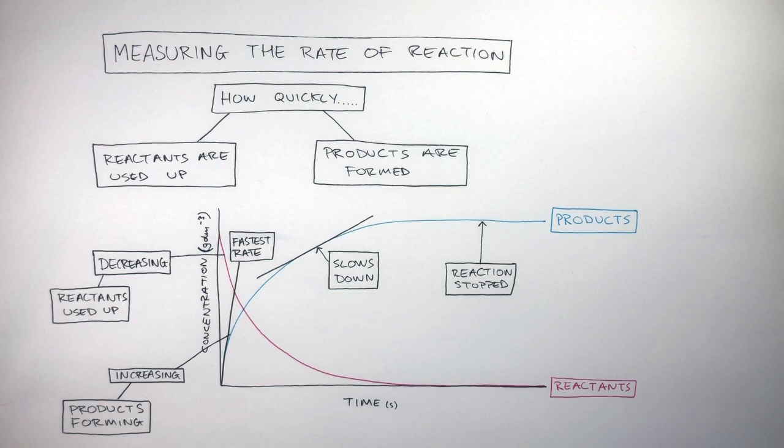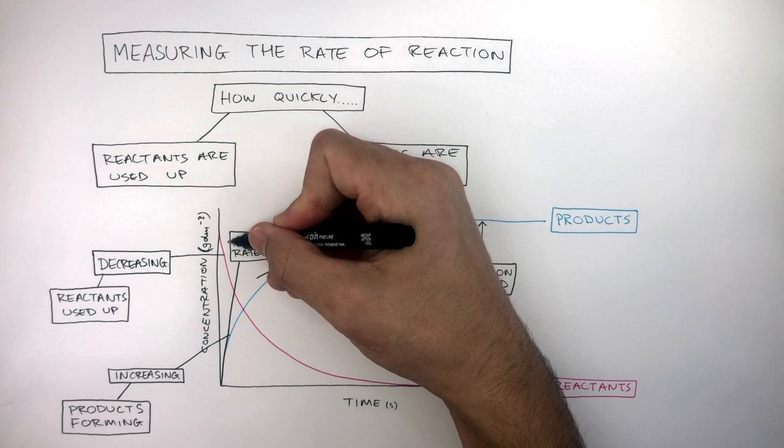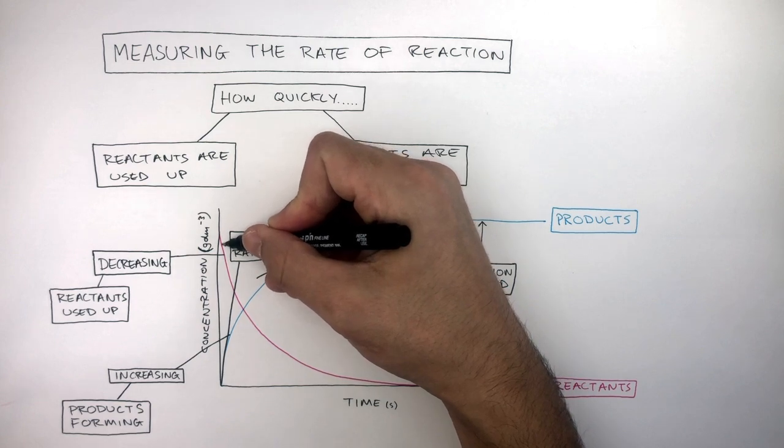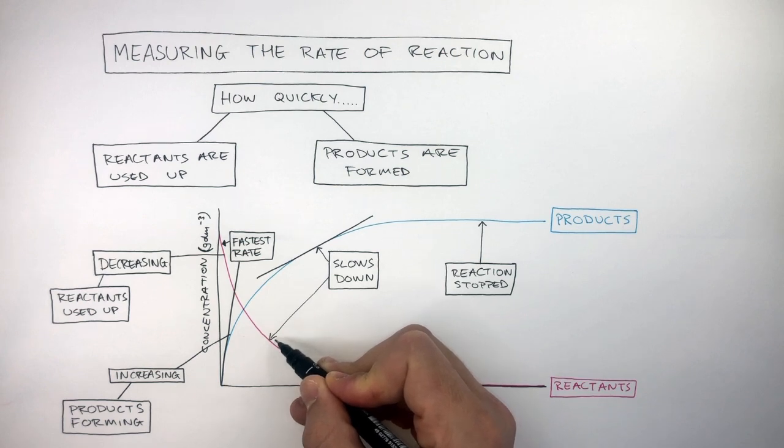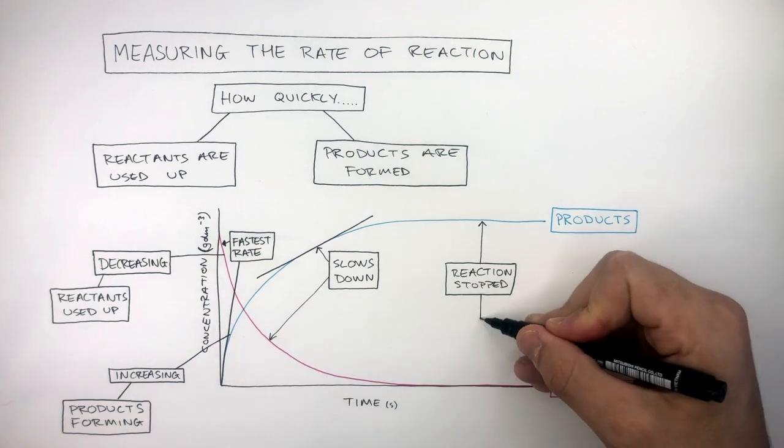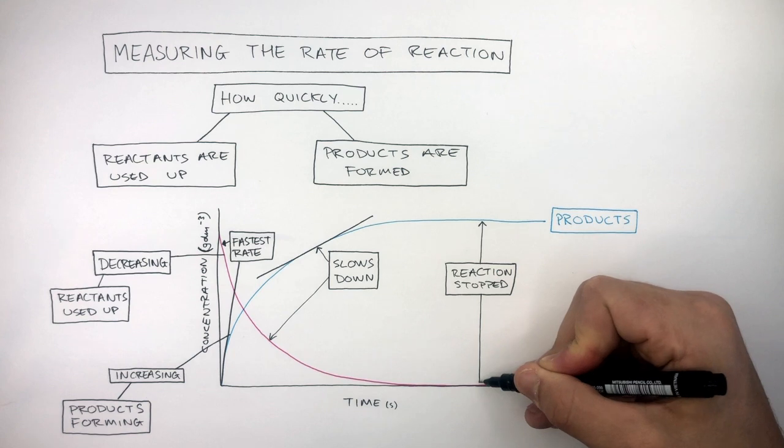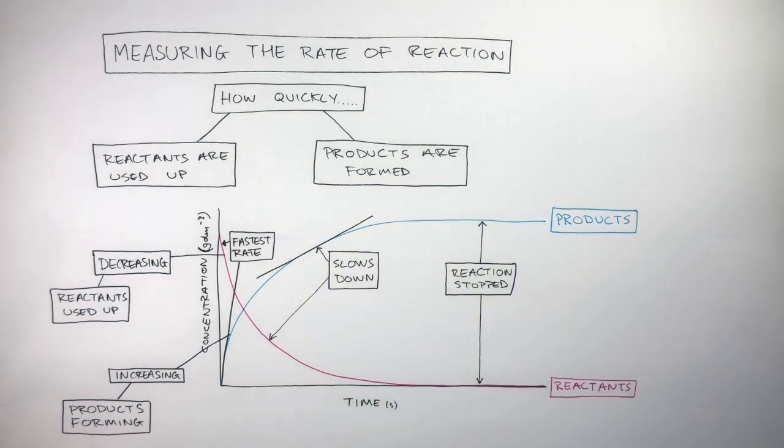These same rules apply to where reactants are being used up. Where the curve is the steepest, this is the fastest rate of reaction. As the curve becomes less steep, the rate is slowing down. And where the curve is flat or horizontal, this means there are no more reactants to be used up, so the reaction has stopped.